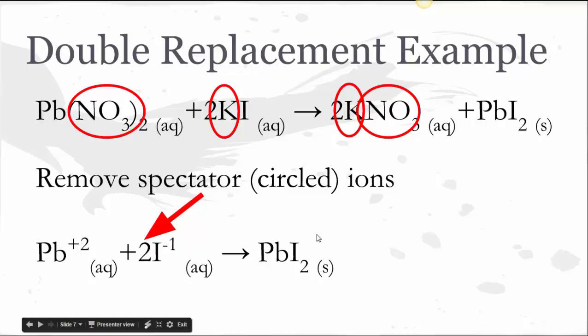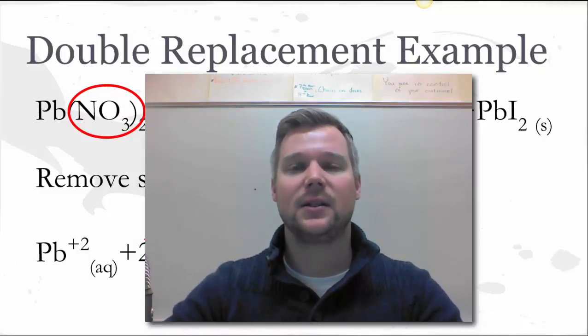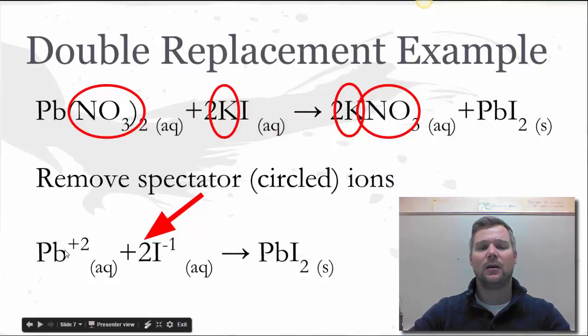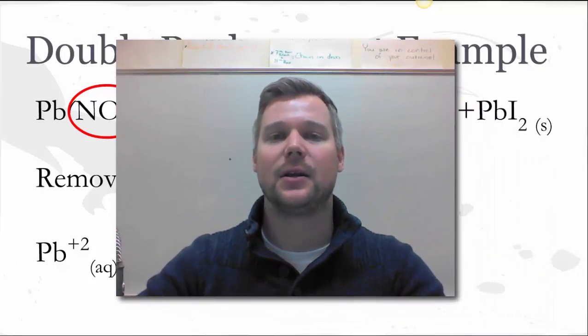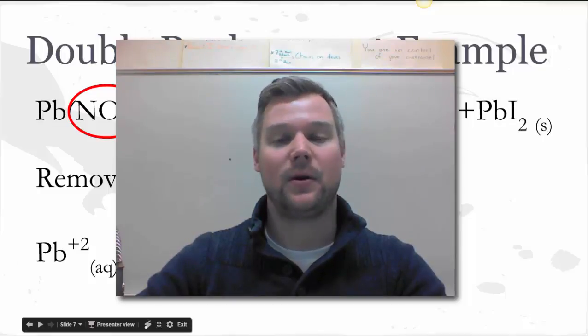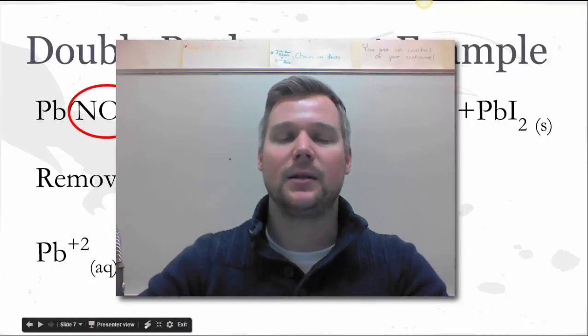So that should take care of a couple examples of both how we identify spectator ions and then how we write the net ionic equation that results from those spectator ions being removed. Remember these are showing the meat and potatoes of the reactions these are the important particles that we have in these reactions. Lead could have been delivered on a different anion, the iodide could have been delivered with a different cation and we could have still had the same overall reaction because those spectators don't matter, just like it doesn't matter which parent is dropping off and picking up the kid at the soccer game. As long as those important players in the reaction itself get to the game that reaction is going to happen as predicted. So I hope that helps and good luck when you're working on these spectator ions and net ionic equations.